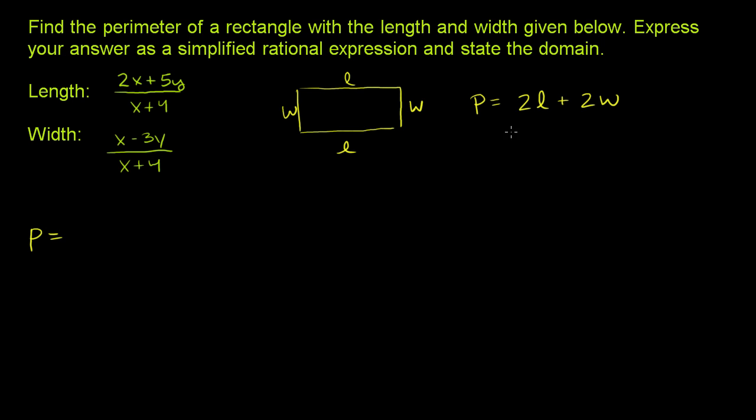So our perimeter is going to be equal to 2 times our length. So we could write it as 2 times (2x plus 5y) over (x plus 4), plus 2 times the width. Plus 2 times the width is right here: (x minus 3y) over (x plus 4).